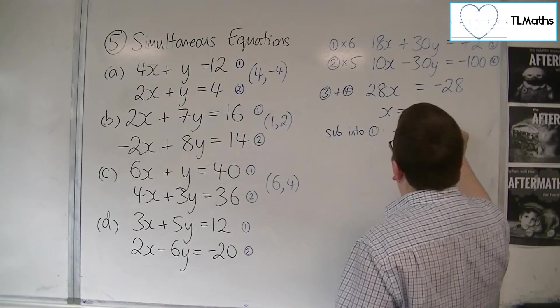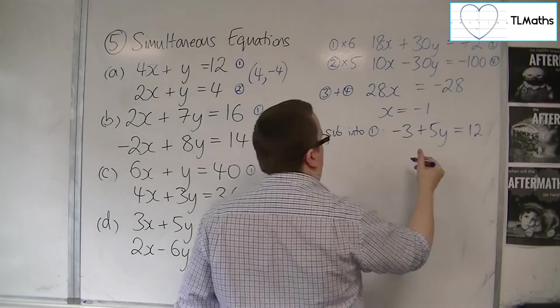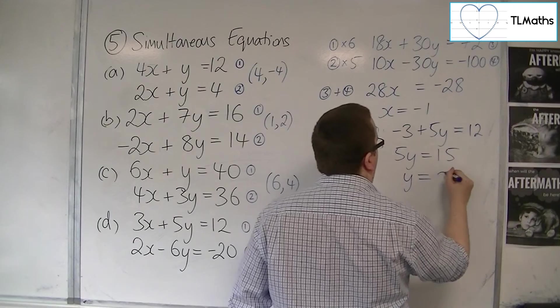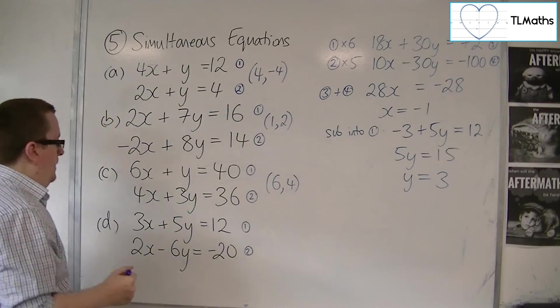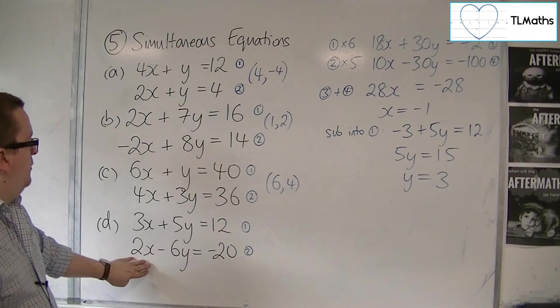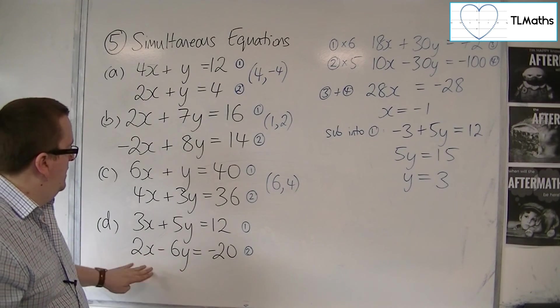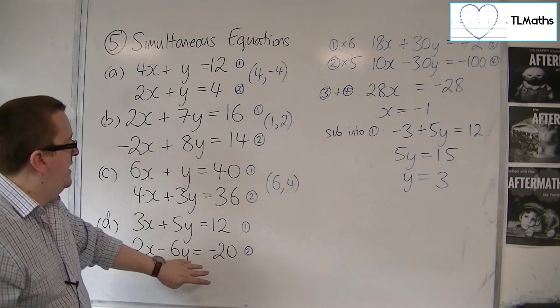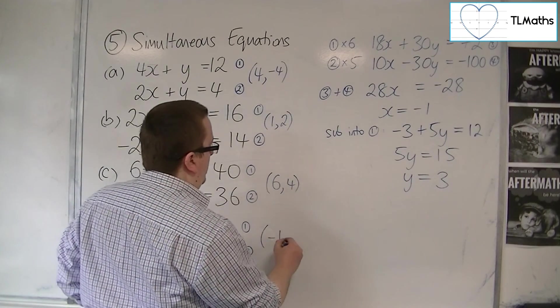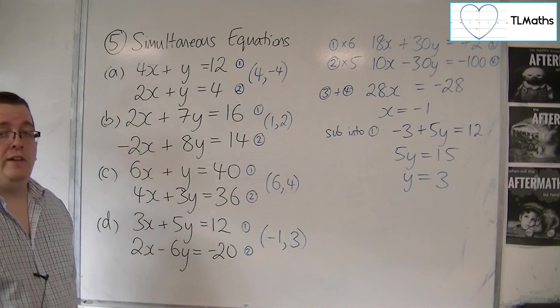I've got plus 5y is equal to 12. I can add the 3 to both sides. So 5y is equal to 15. And then divide both sides by 5. And so y is 3. You can then substitute and check in equation 2. 2 lots of minus 1, so minus 2. Take away 6 lots of 3, so minus 18. Minus 2 take away 18 is minus 20. So it works. So the x value is minus 1. The y value is 3. And that is how we can solve simultaneous equations like this.